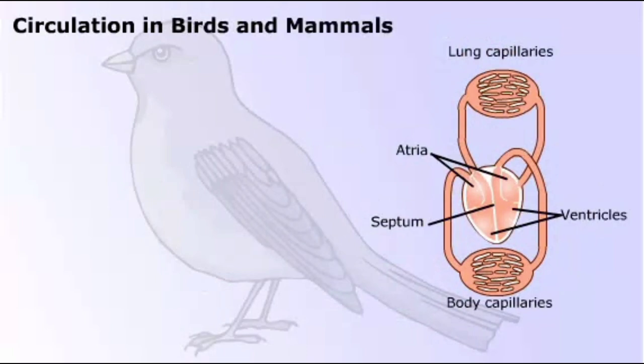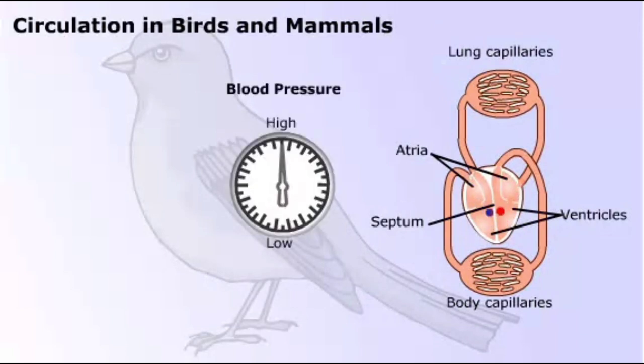Now look at this circulatory system. The septum is now complete, and there are two distinct ventricles. This efficient system is found in birds and mammals. It ensures that the oxygenated blood from the lungs passes to the body organs with no mixing in the ventricles.